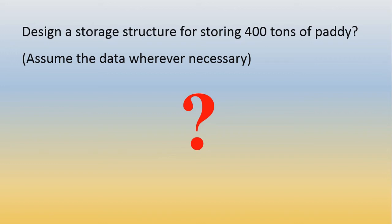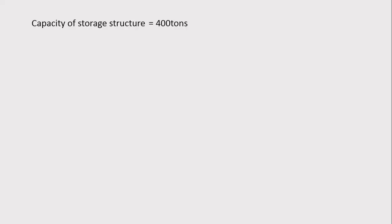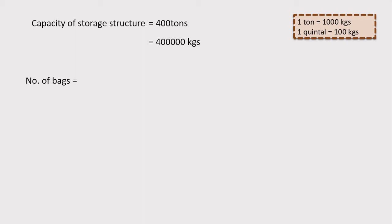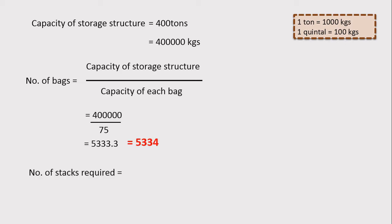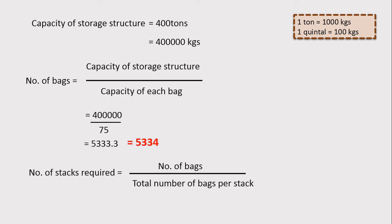The capacity of the storage structure is 400 tons. Since 1 ton = 1000 kg, this equals 4,00,000 kg. Number of bags = capacity of storage structure ÷ capacity of each bag = 4,00,000 ÷ 75 = 5333.3, rounded up to 5334 bags. Number of stacks required = number of bags ÷ bags per stack = 5334 ÷ 1200 = approximately 5 stacks.